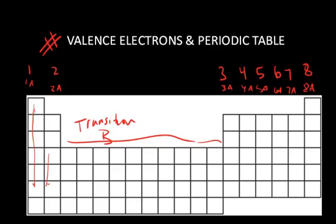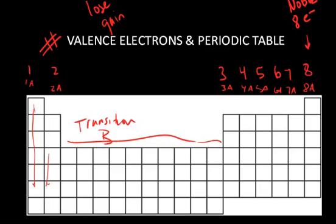Just looking at the representative or A groups, we can definitely predict the number of valence electrons. As it turns out, the group 8A elements — the noble gases — have 8 electrons in their valence shell and they're very stable. They tend not to lose, gain, or share electrons. And what we find is all the other elements in the periodic table tend to lose, gain, or share electrons such that they will have the same number of valence electrons as the noble gases.